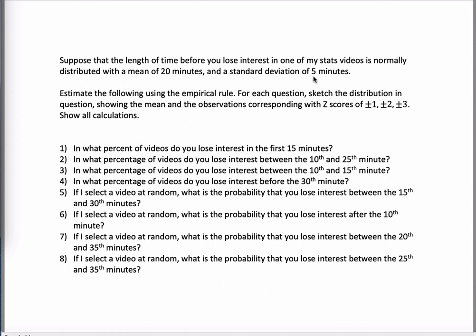They tell you the mean is 20 and the standard deviation is 5. And you already know because of the empirical rule that 68% of observations lie within one standard deviation of the mean.